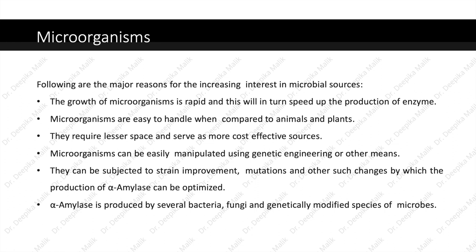Now, why prefer microorganisms? The major reasons for increasing interest in microbial sources are: the growth of microorganisms is rapid, speeding up enzyme production; they are easy to handle compared to animals and plants; they require lesser space and serve as more cost-effective sources; and they can be easily manipulated using genetic engineering, subjected to strain improvement, mutations and other changes by which the production of alpha amylase can be optimized. Alpha amylase is produced by several bacteria, fungi and genetically modified species of microbes.